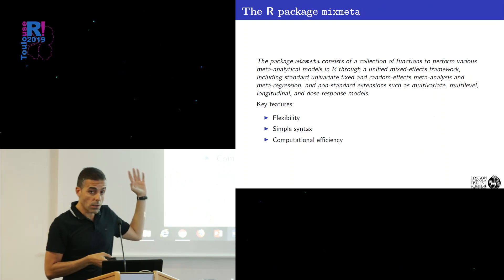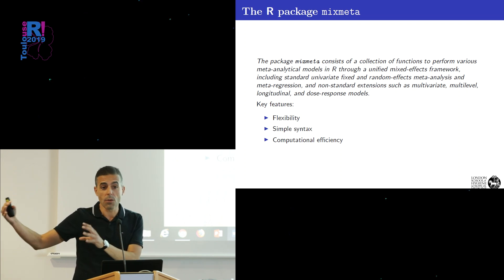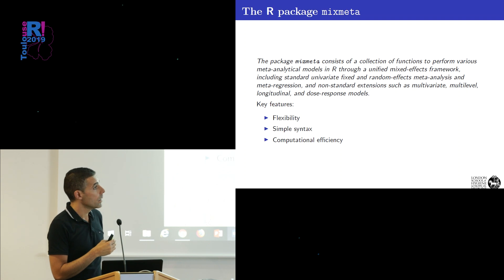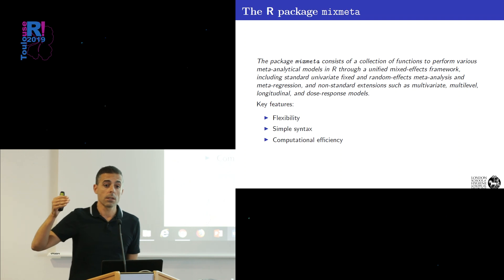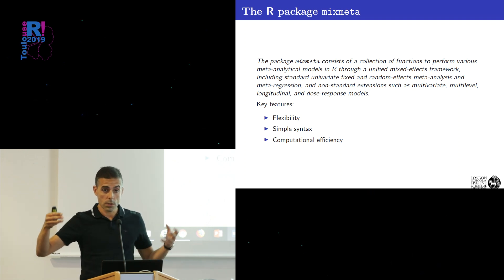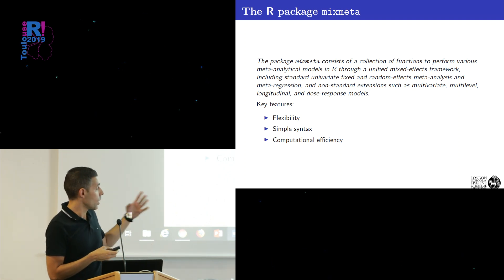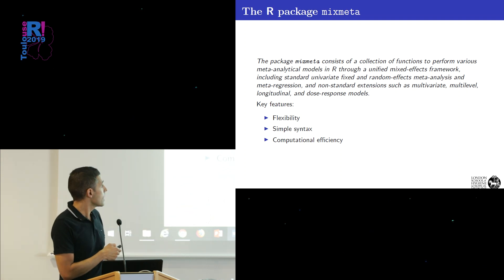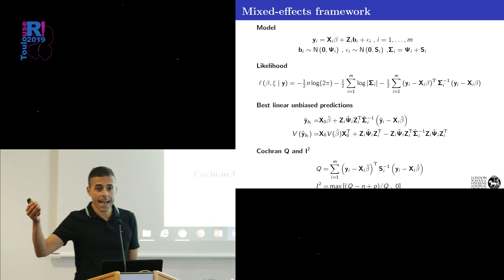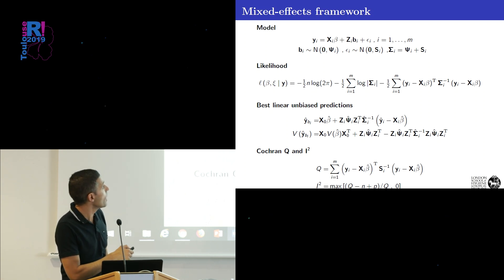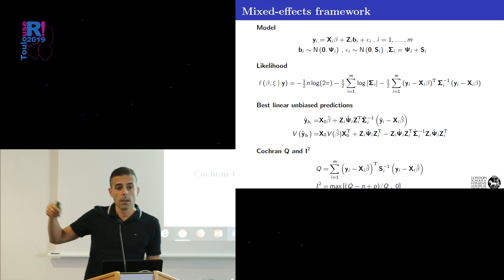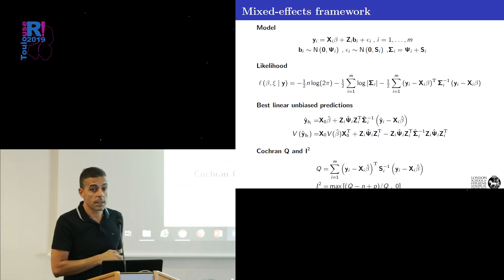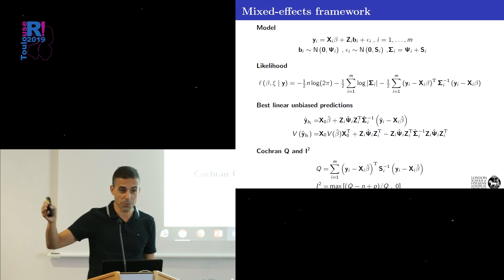The idea of the package mixed meta is to provide a unified framework for this, based on linear mixed models, to fit all these different models with a common interface. There are key features with two main requirements: one is the user's requirement, who wants a very simple tool to use; the other is the programmer's requirement, wanting something computationally efficient and valid. The idea is to cast the meta-analytical problem as a mixed effects framework in which the response depends on predictors via fixed effects and some random variation modeled through random terms.